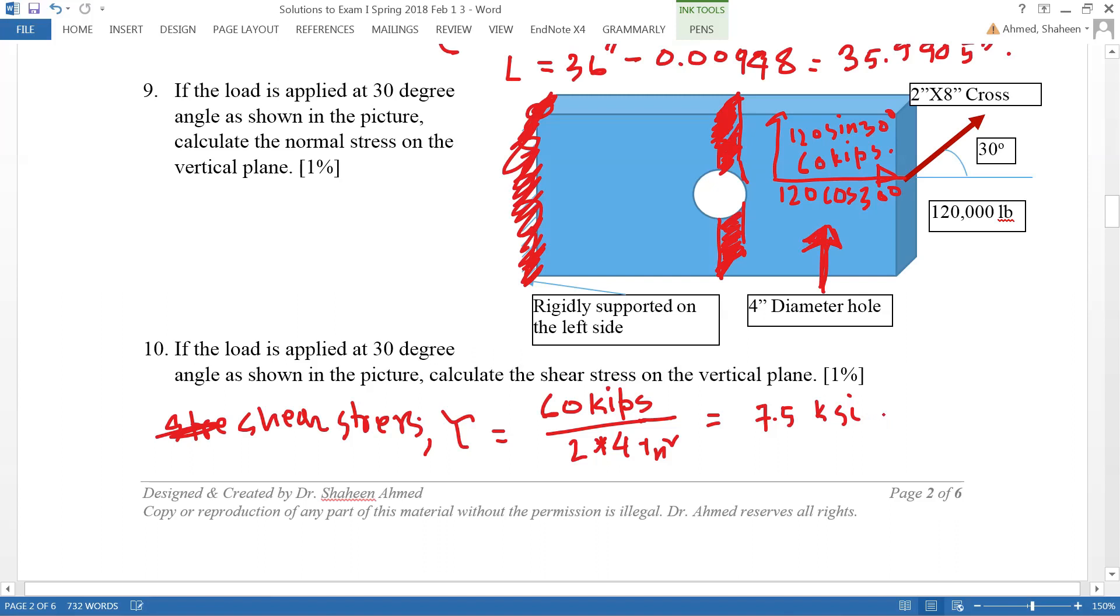If you want to calculate the normal stress in this case, it's basically 120 cosine 30 degrees divided by the same area, just perpendicular to that force. This is gonna be 12.9 Ksi, so less than what we calculated before, 15, because the entire force was acting perpendicular.